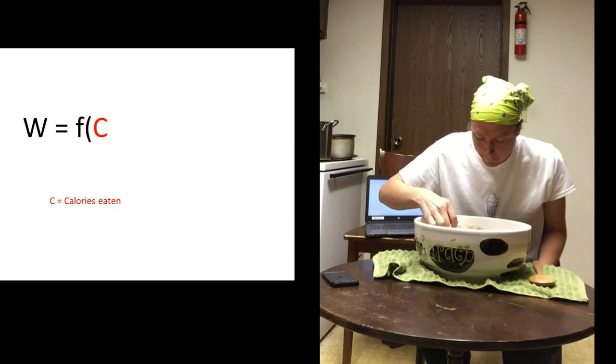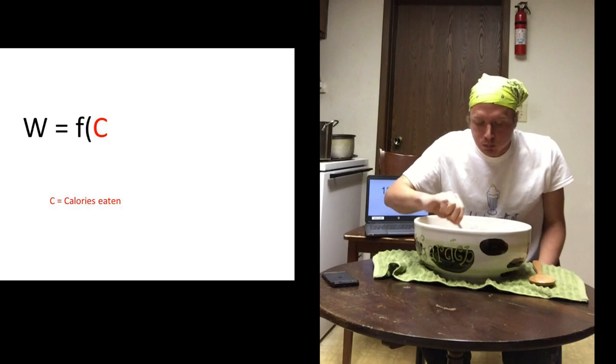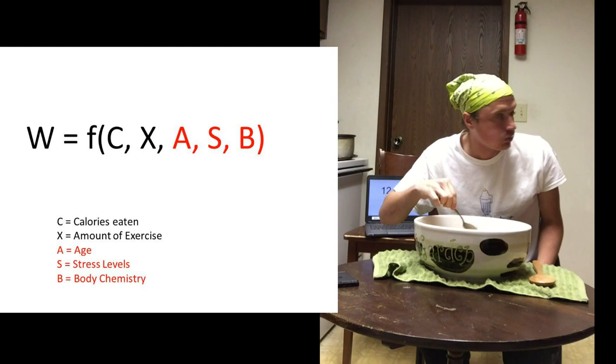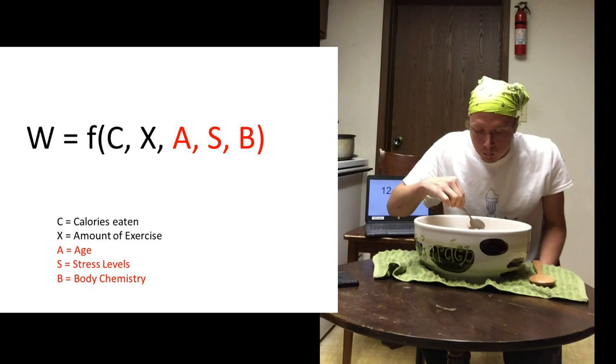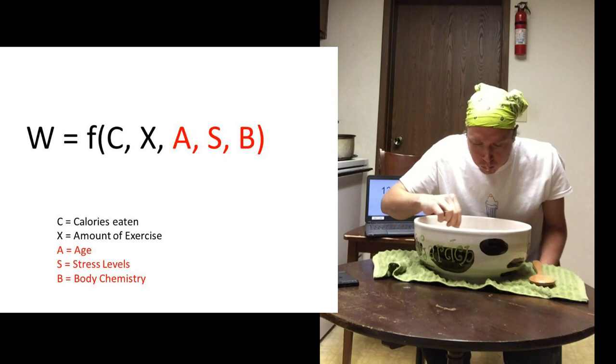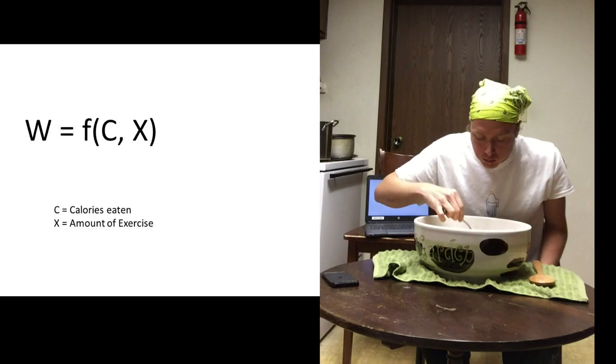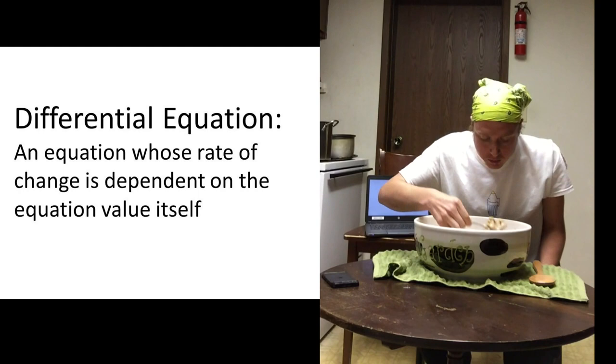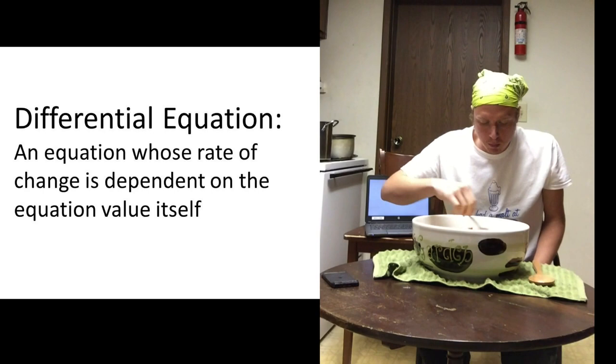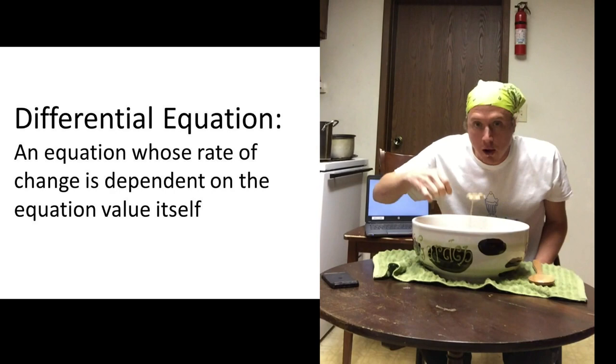Now your body weight, W, is an incredibly complex equation. It is a function of the amount of food you eat, the amount of exercise you get, your age, your level of stress, and your body chemistry, which includes medical conditions, enzyme productions, which in and of themselves are extremely complex equations as they're dependent on family history, environment, and other factors. But for the purposes of this presentation, we are only going to focus on the things you have direct control of, which are calories eaten and amount of exercise you get. So now let's deconstruct this function into its differential equation. Now if you want a little more info on differential equations, the Wikipedia article on them is very good. But for the purposes of this presentation, we are only going to consider differential equations by their simplest definition, which is an equation whose rate of change is dependent on the equation value itself.